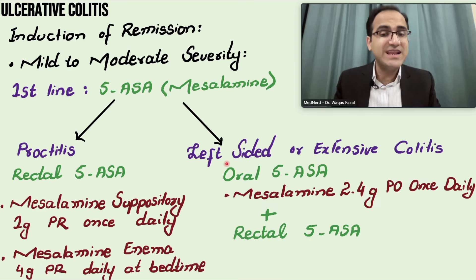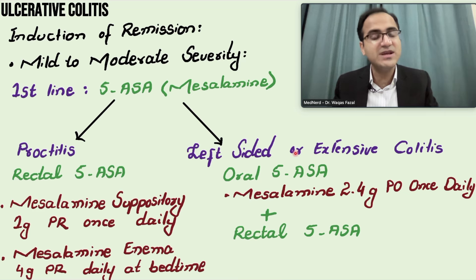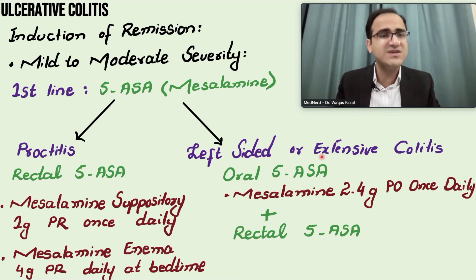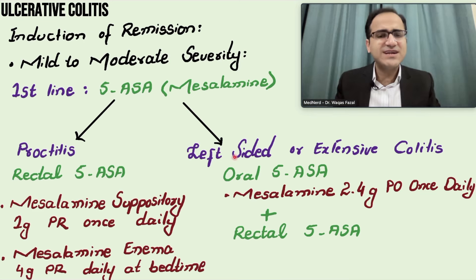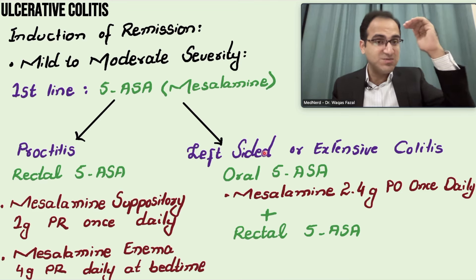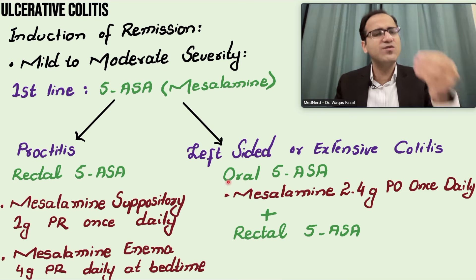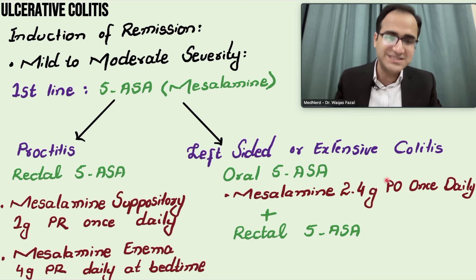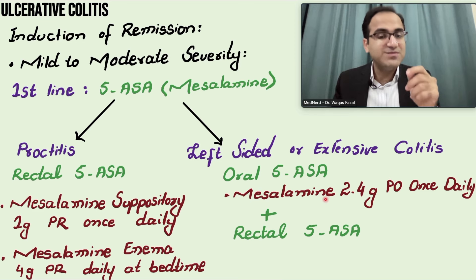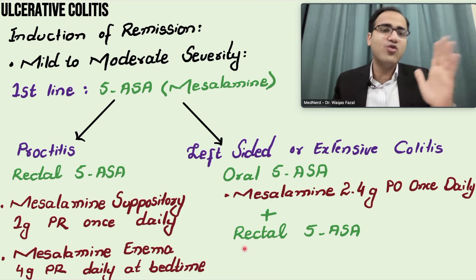If the patient is having left-sided or extensive colitis — not just proctitis — oral mesalamine is given along with rectal mesalamine. Extensive colitis involves the colon from the splenic flexure to the cecum; left-sided involves from the splenic flexure to the rectum. Give oral mesalamine 2.4 grams orally once daily, plus rectal mesalamine enema 4 grams per rectum daily at bedtime.